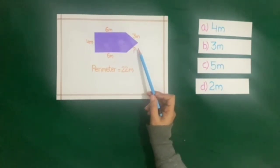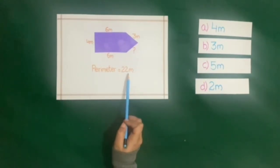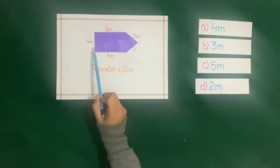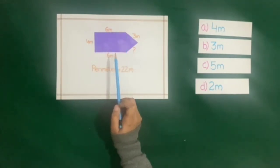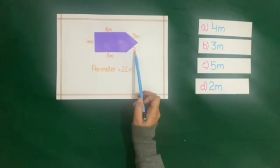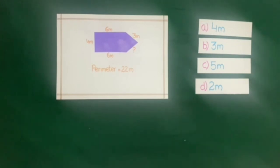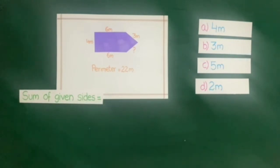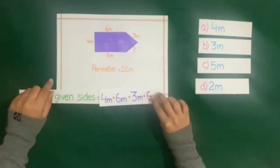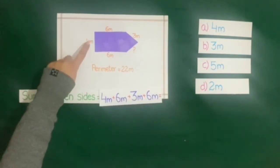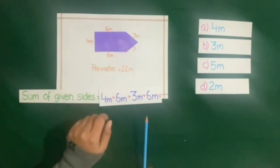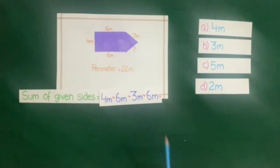Here a figure is given whose perimeter is 22 m and the length of 4 sides of this figure is given. We have to find the length of the 5th side. Four answers are given and we will choose the correct answer. The sum of the given sides is 4 meters plus 6 meters plus 3 meters plus 6 meters, which is equal to 19 meters.